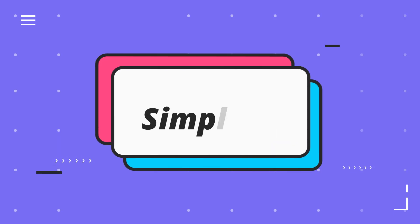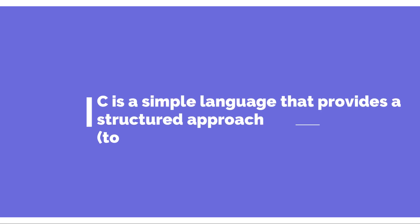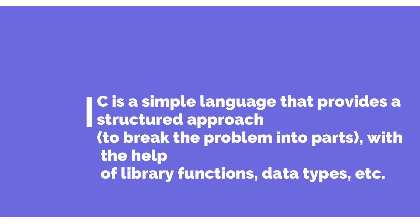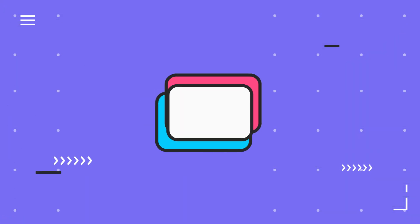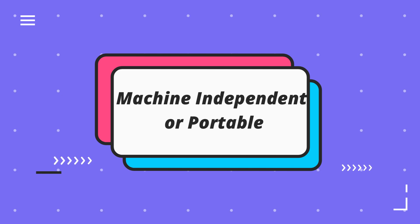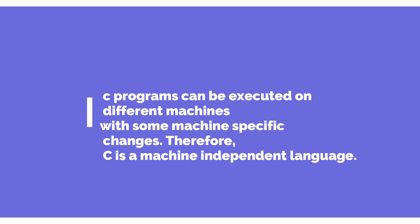Now let's look at the features of C programming. First, it is simple. C is a simple language that provides a structured approach, which means breaking the problem into parts with the help of library functions, data types, etc. Second, it is machine independent or portable. C programs can be executed on different machines with some machine-specific changes, therefore C is a machine independent language.